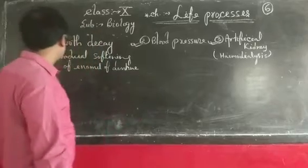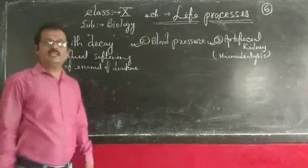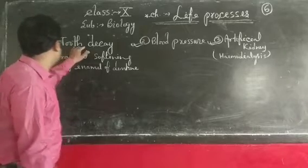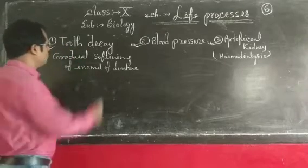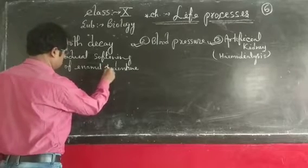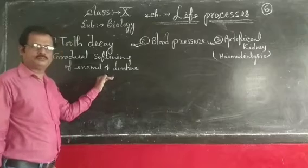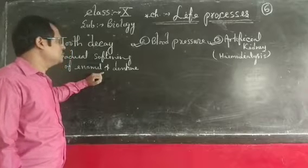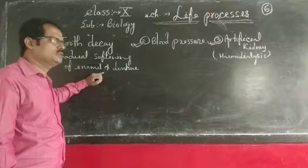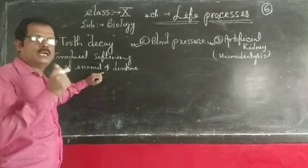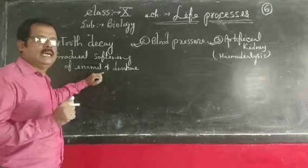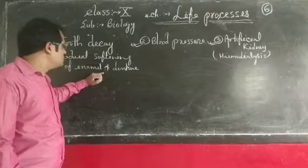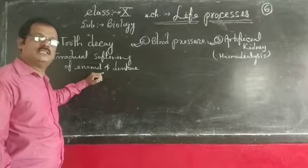First, I start the first topic: tooth decay. What is tooth decay? Rotting of teeth is called tooth decay. It means the gradual softening of enamel and dentine. These are the layers of teeth. The outer layer of teeth is called enamel and the inner layer is called dentine. The outer layer is the hard part and the inside part is also the soft part of teeth. Due to this process, a hole occurs in the teeth.